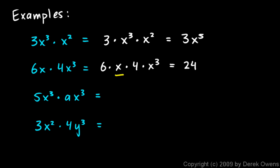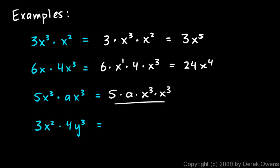For 5x cubed times ax squared, rearrange it as 5 times a times x cubed times x cubed. The 5 and a stay as 5a, and x cubed times x cubed becomes x to the power of 6, because the exponents 3 and 3 add up to 6. So the answer is 5ax to the sixth.